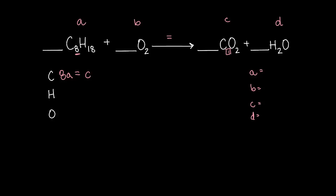For hydrogen, we have 18 moles in A. No more on the reactant side, so we cross the reaction arrow — equals — and we only have 2 moles in D. For oxygen, 2B equals 2C plus 1D. The plus sign is there because we add everything on the reactant side, and once we cross the reaction arrow we write an equal sign and add everything on the product side separately. It's simple algebra.